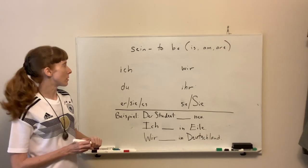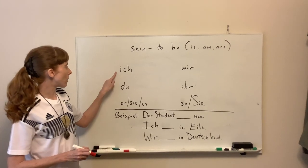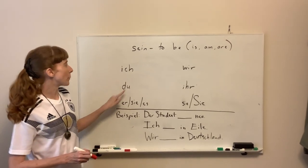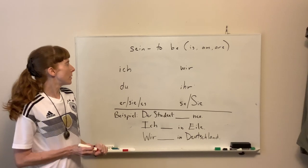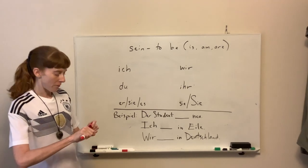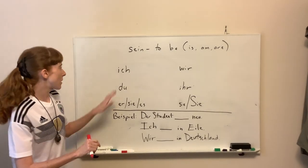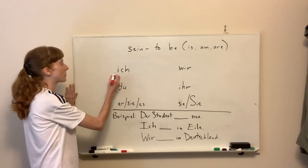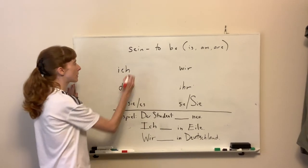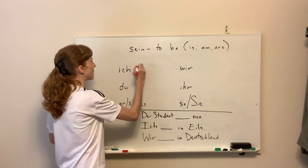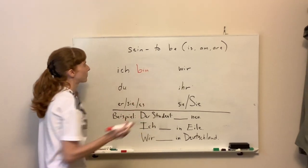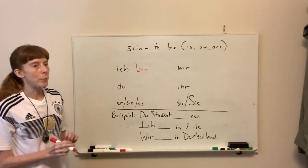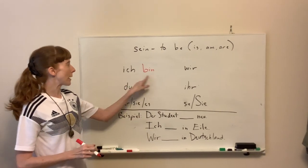It's irregular, so I've got our pronoun chart up here. The first thing we'll do is fill it in for ich, and that is bin — ich bin — I am.